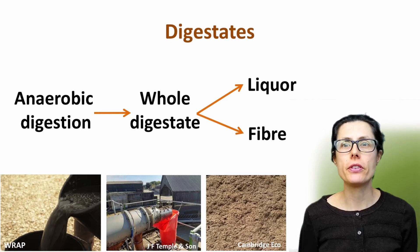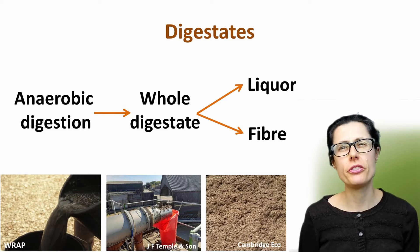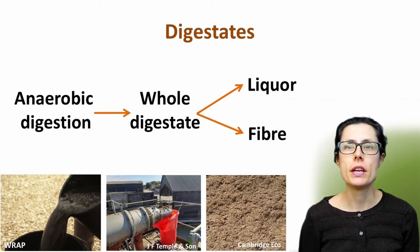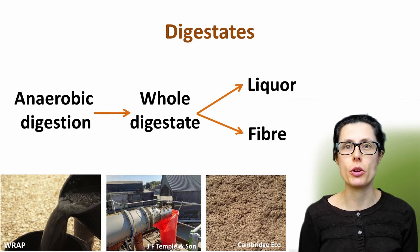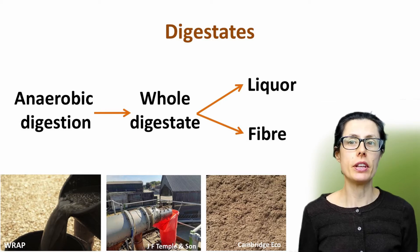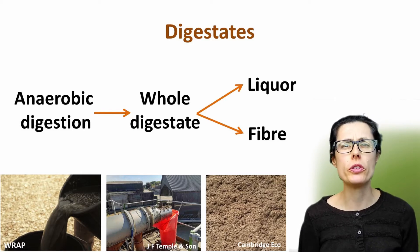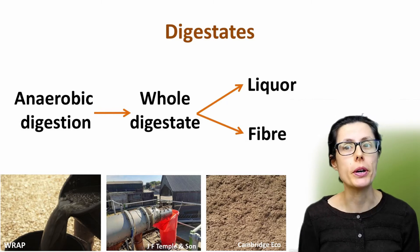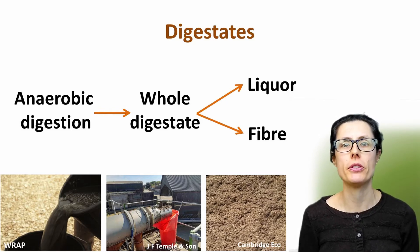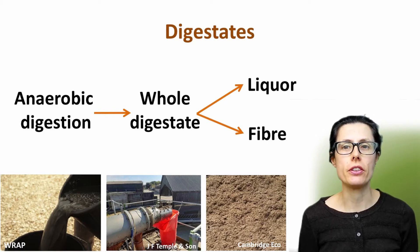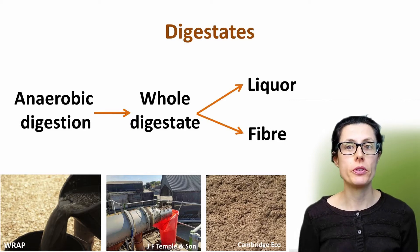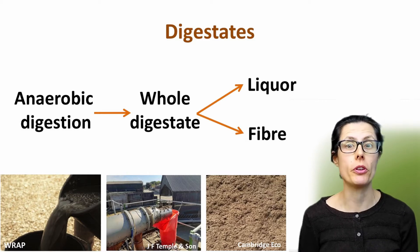In some anaerobic digestion plants, the digestate produced is left whole. This is generally 3–10% dry matter. In others, the digestate is separated into a liquid and a solid fraction, with an example of a screw-press separator shown in the middle photo. The separated liquid fraction is called liquor and is often 1–6% dry matter. The solid fraction is called fibre and is typically 18–40% dry matter. When digestates are separated, phosphorus tends to bind to the organic matter and therefore ends up in the fibre fraction, so liquor digestates generally contain less phosphate. Potassium and nitrogen are both water-soluble and therefore predominantly end up in the liquid fraction, although there will be some in the solid fibre as well.